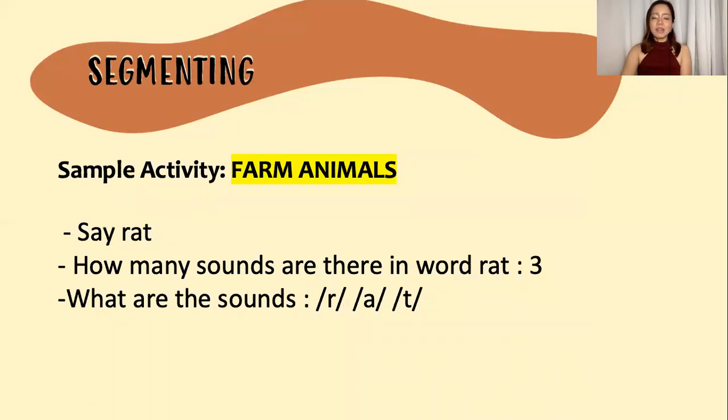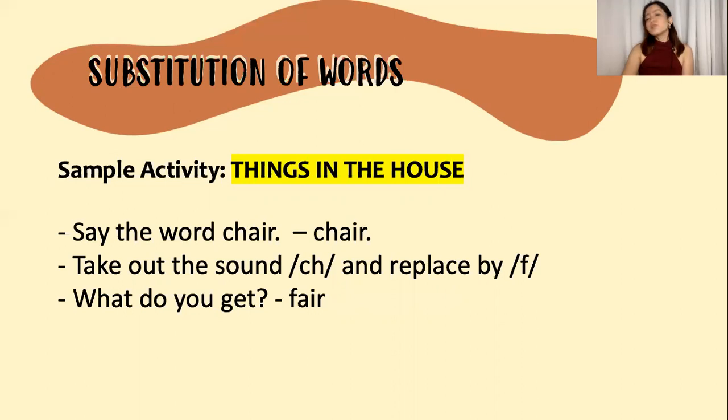Another is segmenting. If blending is combining, segmenting is breaking words into separate sounds. This strategy is helpful for reading and spelling, especially to those words that do not follow regular patterns. So, for example, the word rat has three sounds. It is similar to the number of letters involved. But when we say sheep, like what we've said a while ago, the number of letters doesn't match with the number of sounds. That's right. For substitution of words, here's a sample activity. We could incorporate this while looking at things in the house. Say the word chair. Take out the sound ch and replace by f. What do you get? Fair. Correct.